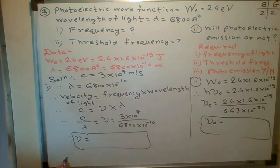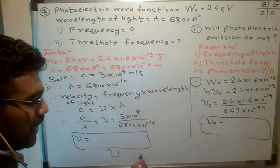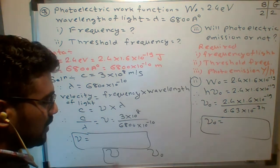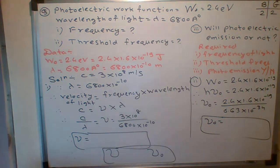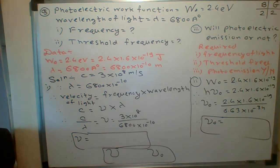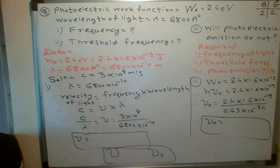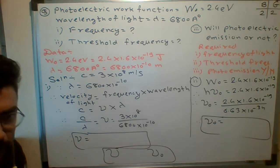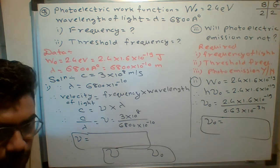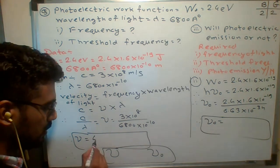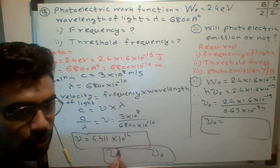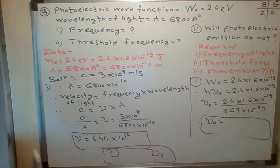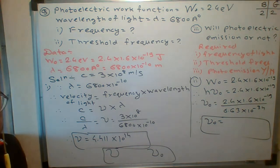Now calculate ν naught and compare ν and ν naught — which one is greater? The frequency of light ν is 4.41 into 10 to the 14 hertz. The threshold frequency ν naught is 5.791 into 10 to the 14 hertz.